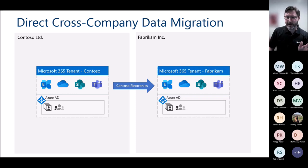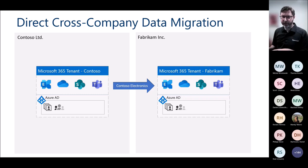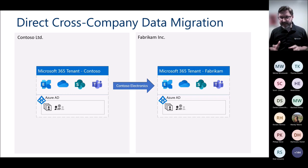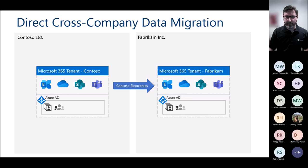The first scenario is direct cross-company data migration. In this example, Contoso Limited is selling its electronics division to Fabrikam. The assets related to the Contoso electronics division need to get transferred directly to Fabrikam. With direct cross-company migration, there's a real focus on speed because Contoso and Fabrikam will have a transition of services agreement with tight timelines — you probably have to work over a few really busy weekends. Ties are severed and there's not much need for long-term coexistence.